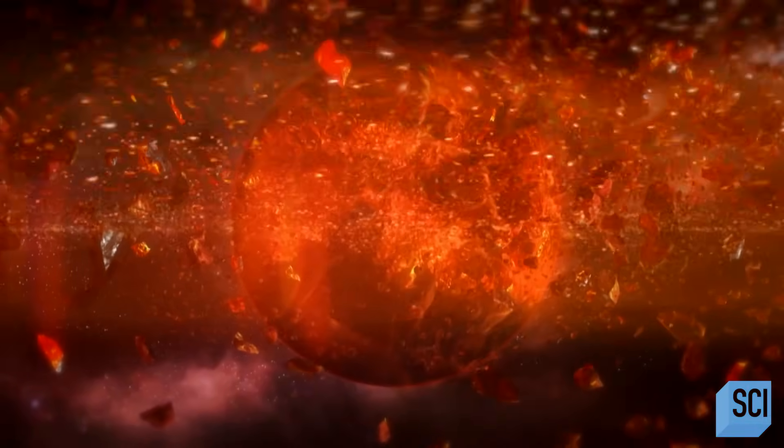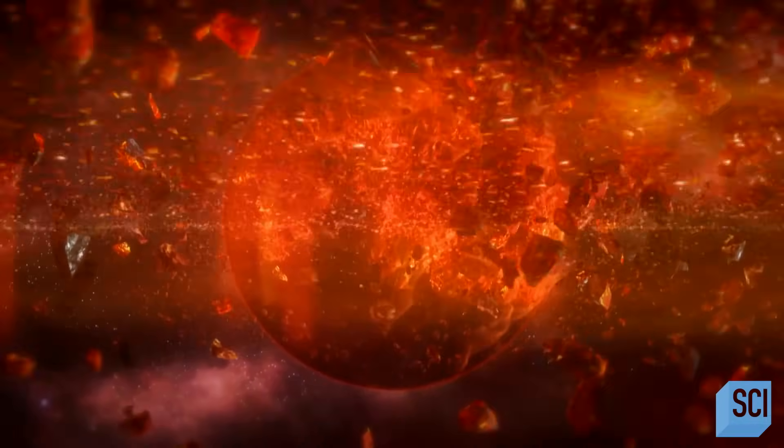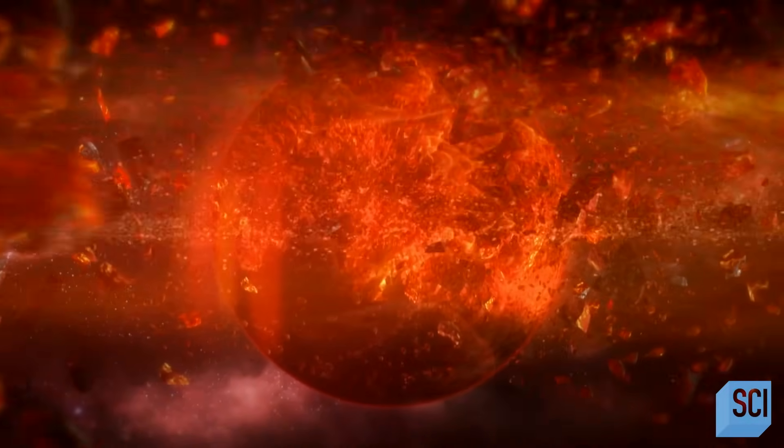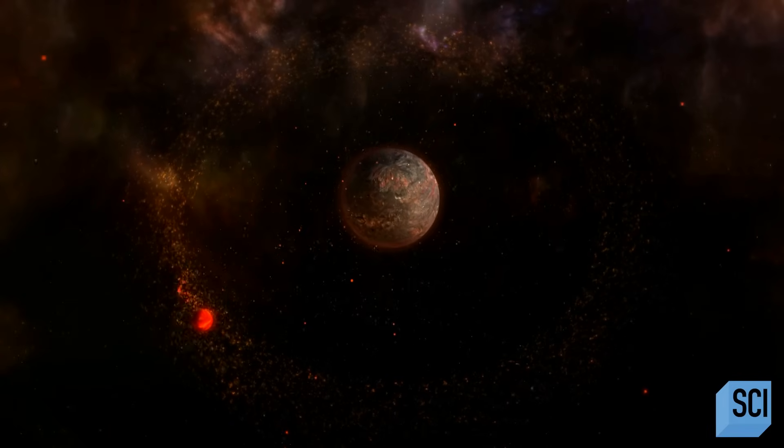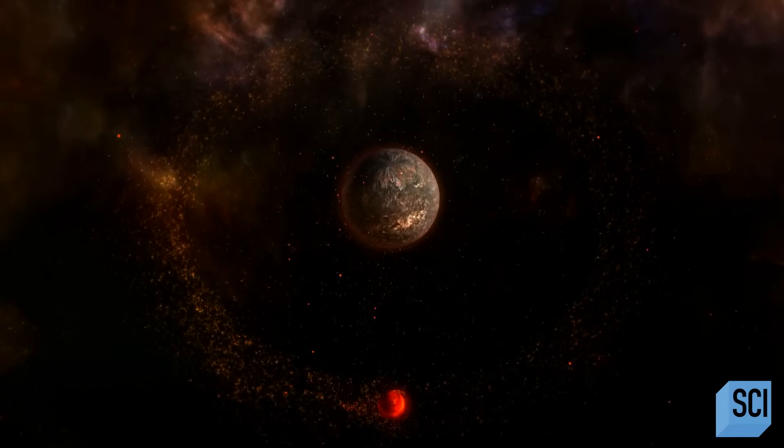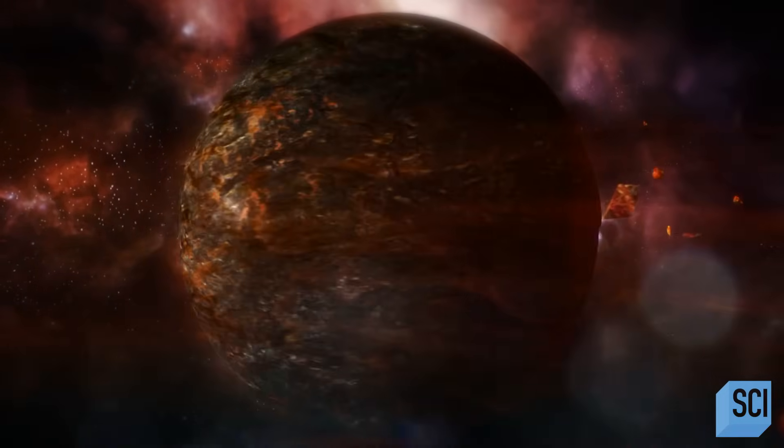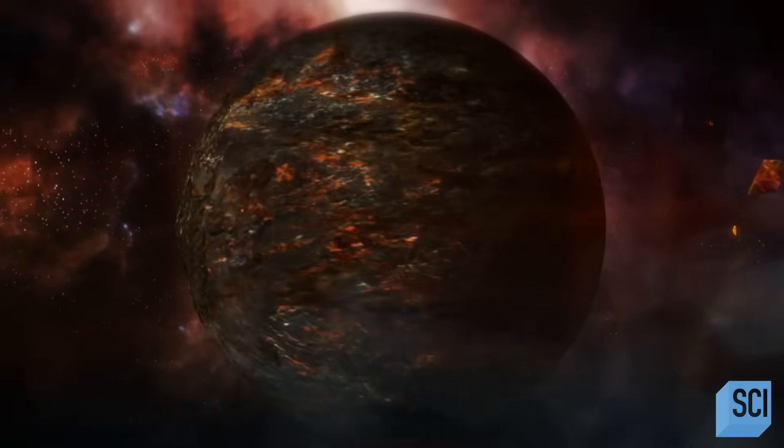In the classical view of how the moon formed, something the size of Mars has a glancing collision with what would have been Earth, thrown off a bunch of material that built a big disk of debris out of which the moon formed. But there's a problem with this theory.